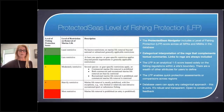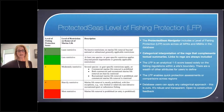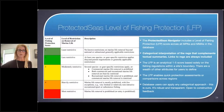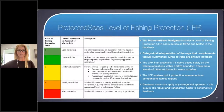The level of fishing protection score is a categorical interpretation of the regulations that complements textual summaries. Links to the regulations are always included. There's a 1-to-5 scale from least restrictive to most restrictive, which enables quick protection assessments or comparisons across regions. Database users can apply any categorical approach — this is ours, and it's robust and transparent, though we're always open to constructive feedback.